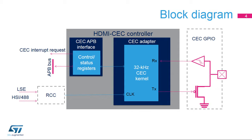Two clocks are available for the HDMI CEC controller: the APB clock or PCLK for the APB interface, and the 32 kHz kernel clock for the CEC adapter. The kernel clock can be derived from LSE or HSI divided by 488 clock sources.